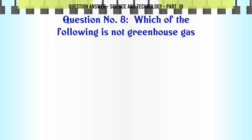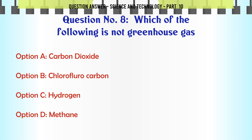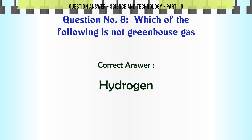Which of the following is not a greenhouse gas? A. Carbon dioxide. B. Chlorofluorocarbon. C. Hydrogen. D. Methane. The correct answer is Hydrogen.